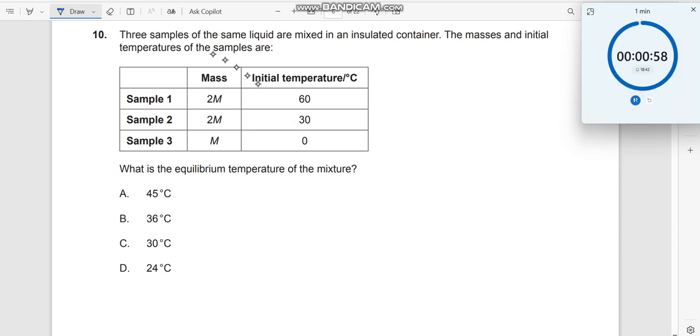Question number 10. Three samples of the same liquid are mixed in an insulated container. The masses and the initial temperatures of the samples are given. What is the equilibrium temperature?